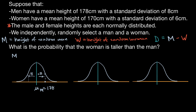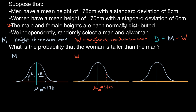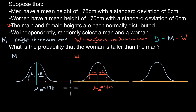Now let's think about the random variable W. The mean of W is 170 centimeters. One standard deviation above the mean is six centimeters above, since the standard deviation is six. And one standard deviation below the mean would be 164 centimeters.